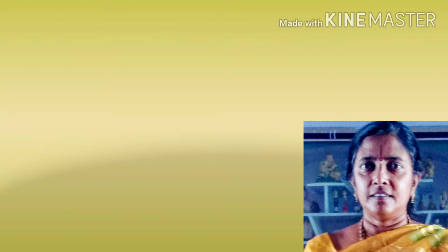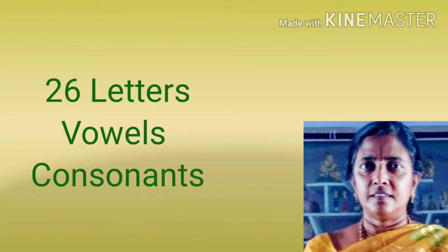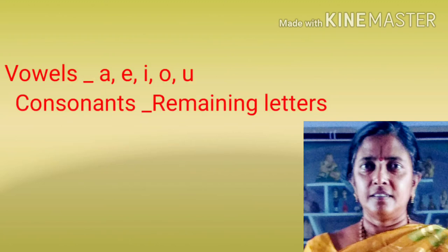How many letters are there in the English language? We have 26 letters, and those 26 letters are called vowels and consonants. A, E, I, O, U are called vowels and all remaining letters are called consonants.